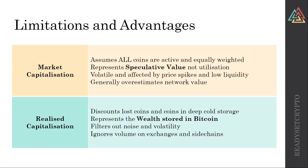To summarize: the market cap assumes all coins are active and equally weights each one regardless of whether they're lost or not — it's the speculative value, not the utilization of the network. It is volatile, affected by price spikes, and for low-liquidity projects it's not a great measure of true network value, generally overestimating in bull markets. Whereas the realized cap discounts lost coins and coins in deep cold storage, representing the wealth actually stored in Bitcoin and filtering out noise and volatility, though it does ignore volume on exchanges and side chains.